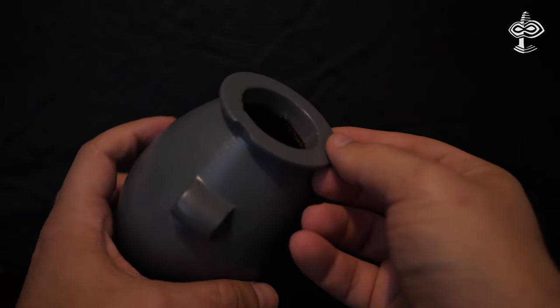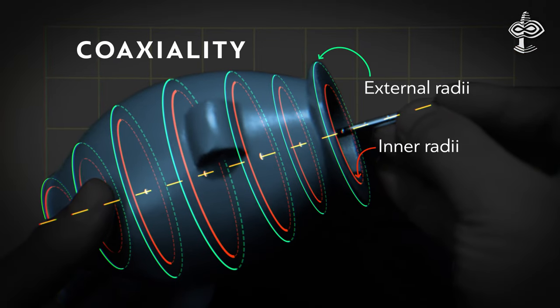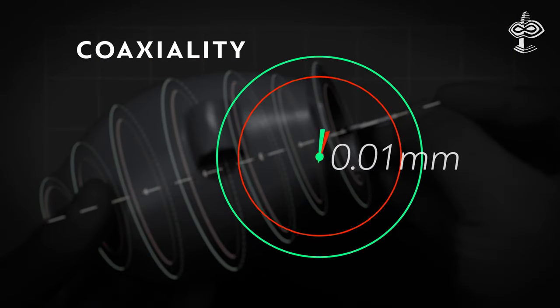For example, the internal and external surfaces of this object are perfectly aligned or coaxial in such a way that their centers are precisely on the same straight line with an accuracy better than 0.01 millimeters.